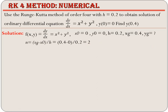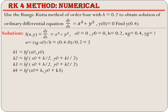Instead of xg and yg you may also use xn and yn variables. For the RK4 method we calculate k1, k2, k3, and k4. k1 is calculated using the formula h times f(x0, y0), and k2, k3, k4 are calculated using their respective formulas. Then we calculate the weighted mean k as (k1 + 2·k2 + 2·k3 + k4) divided by 6. Finally we find the value of yg using y0 plus k, completing the first iteration.